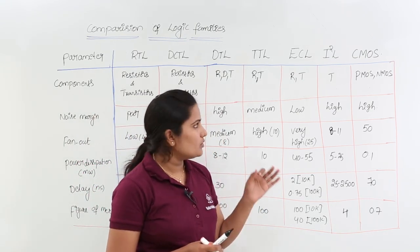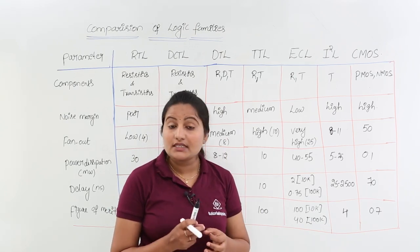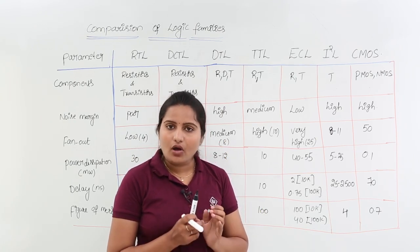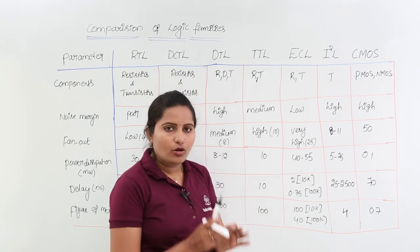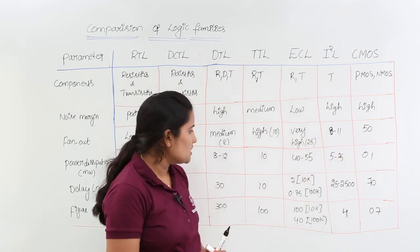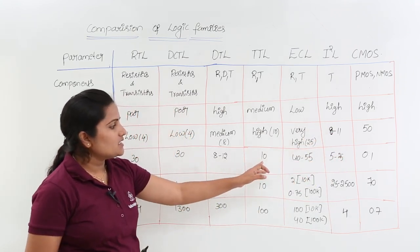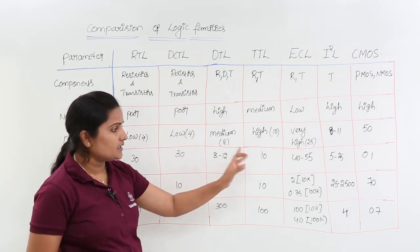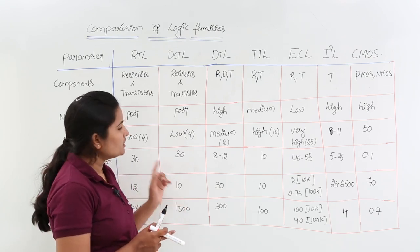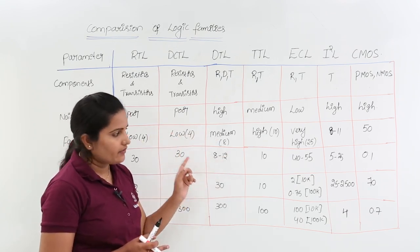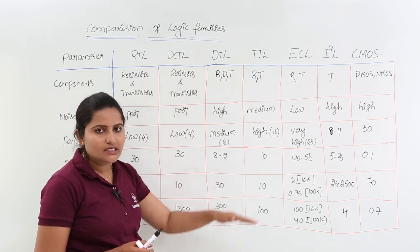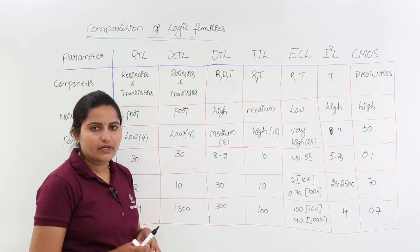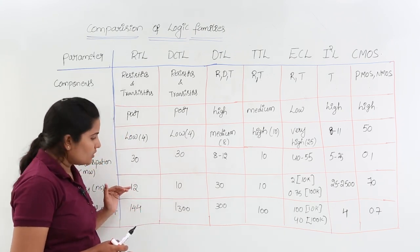This is a very important point from an exam perspective: among all logic families, CMOS has the lowest power dissipation. DTL and TTL have moderate power dissipation within bipolar families. But if you compare all logic families including unipolar, CMOS always has the lowest power dissipation.